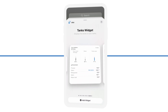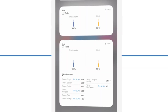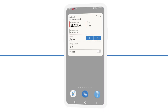There are two tank widgets available, with one including your temperature sensors. You can also see the status of an EV charging station and see the amount of time your vehicle has charged.